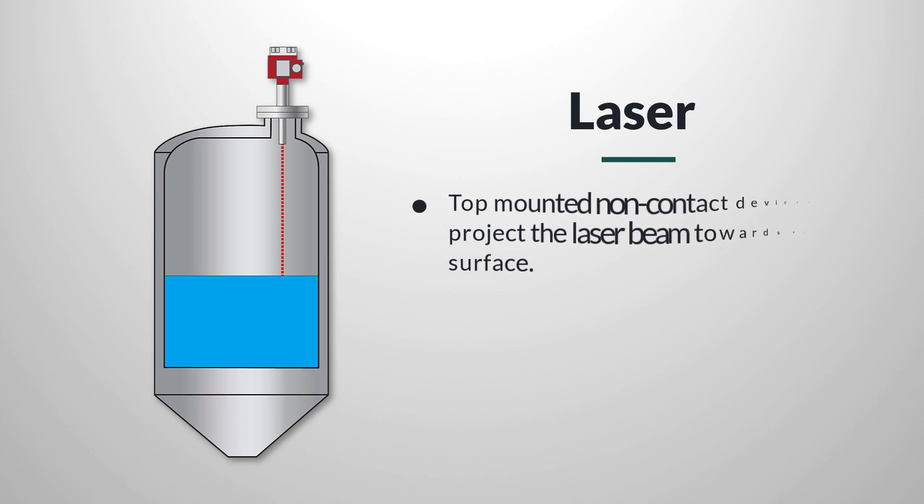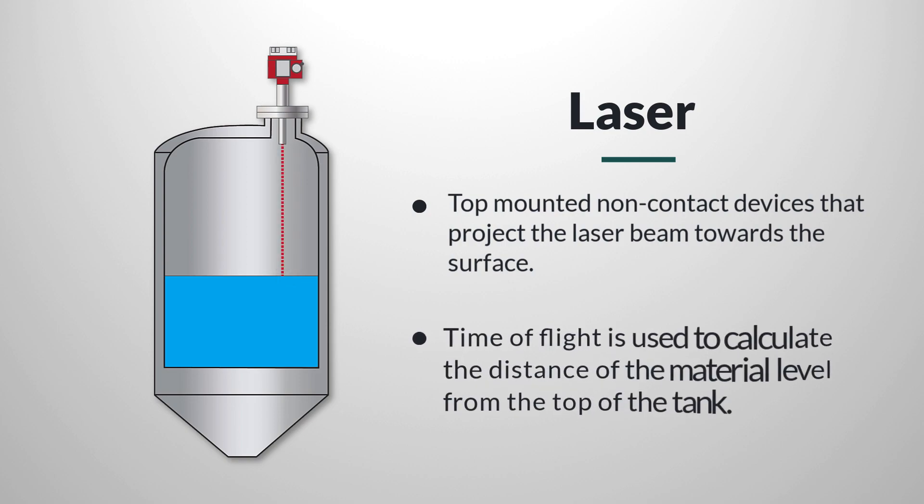Laser level is a relatively uncommon technology that shows increasing promise for certain difficult applications. Laser level gauges are top-mounted, non-contact devices that project the laser beam toward the surface. Time of flight is used to calculate the distance of the material level from the top of the tank.